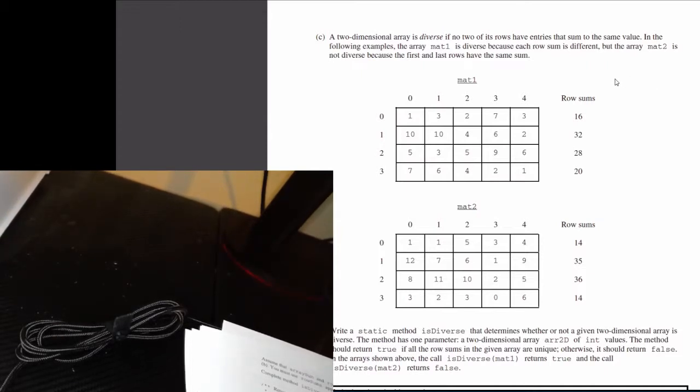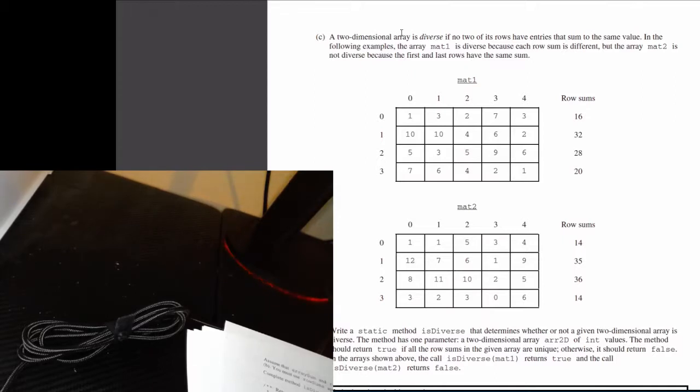So let's take a look at what this problem is asking us to do. First they give you background information about what a diverse array is. A 2D array is diverse if no two of its rows have entries that sum to the same value. For example, looking at MAT1, this is a diverse array because all the sums of each of the rows are distinct.